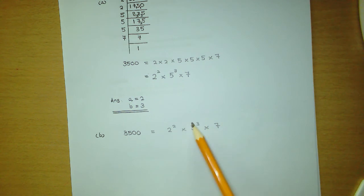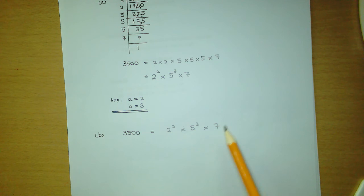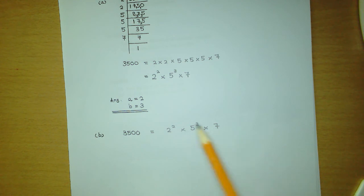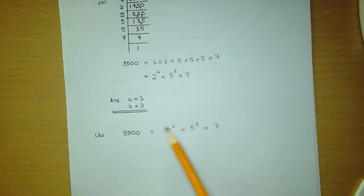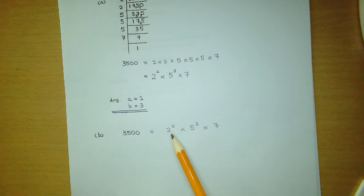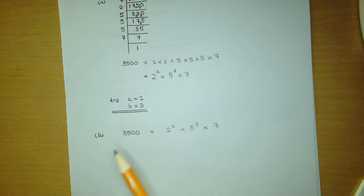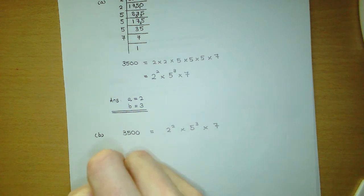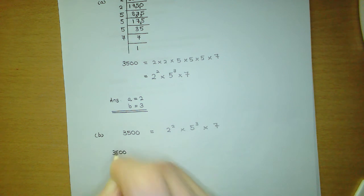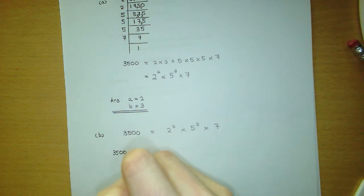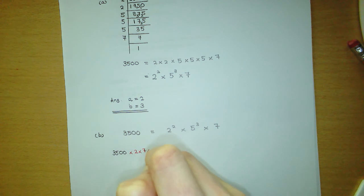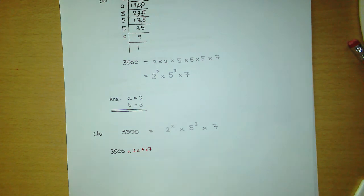Notice that only the 5 has a power of 3. To make the 7 have a power of 3 we'd need to multiply by two more 7s. And to make the power of 2 into a power of 3 we'd need to multiply by another 2. So we need to multiply the right-hand side by one more 2 and two more 7s, and we have to do the same to the left-hand side.